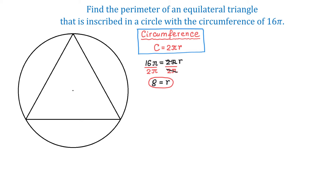Now, in this figure, let's connect the center of the circle to one of the vertices of this triangle. We know that in an equilateral triangle, each angle measures 60 degrees, and this radius splits this angle into two equal angles, each measuring 30 degrees. This is because, in an equilateral triangle inscribed in a circle, the angle bisectors meet at the center of the circumscribed circle.